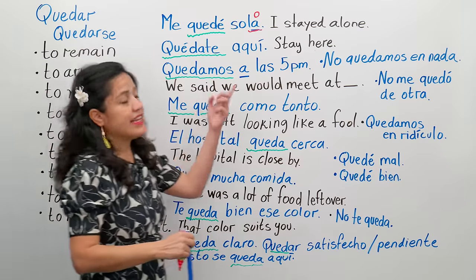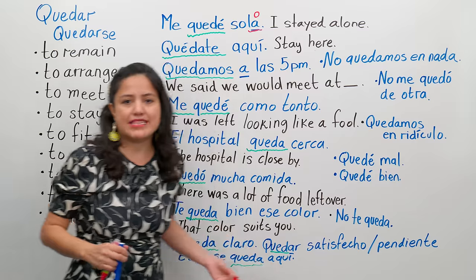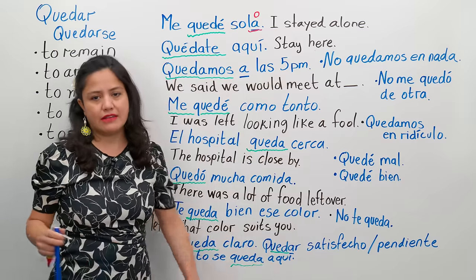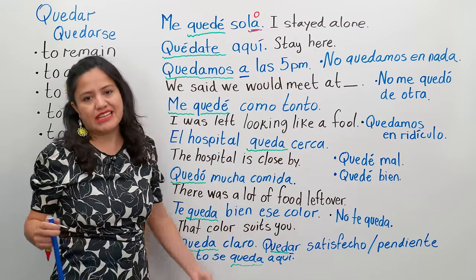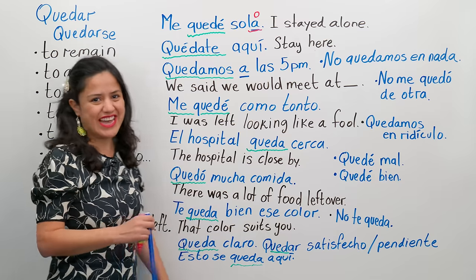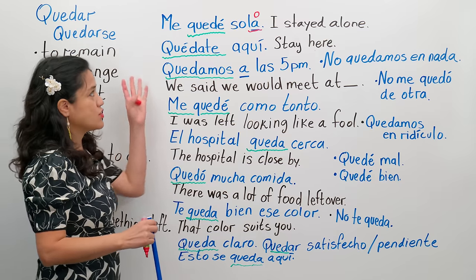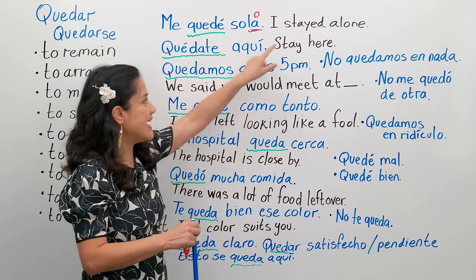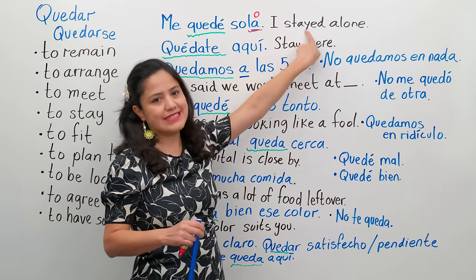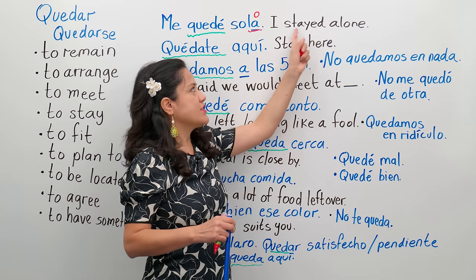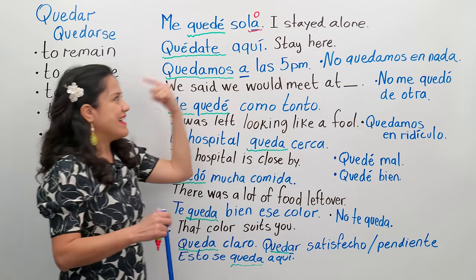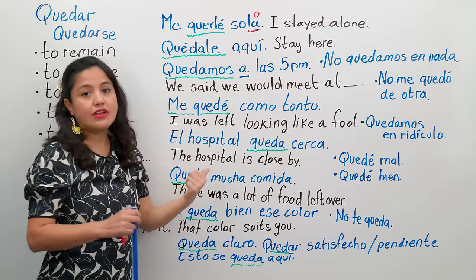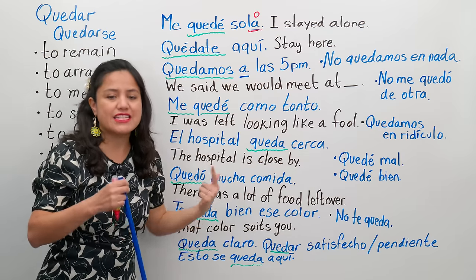Which is: I stayed alone. I stayed by myself. All my family left — me quedé sola. ¿Qué haces? Nada, me quedé sola. No estoy haciendo nada. So here, quedé is taking the meaning of "I stayed." It's the translation of I stayed alone, I stayed by myself. Me quedé sola, o me quedé solo.